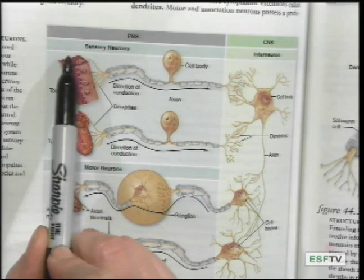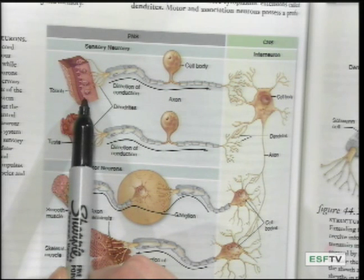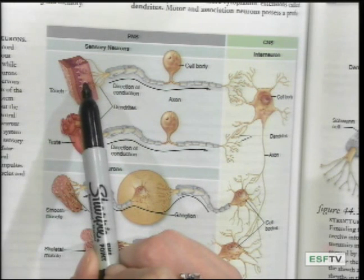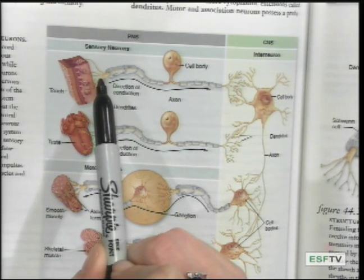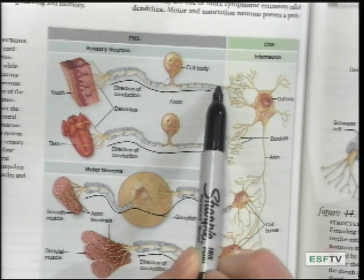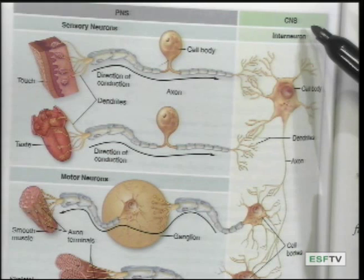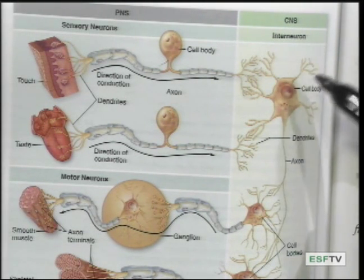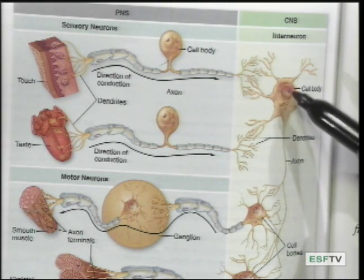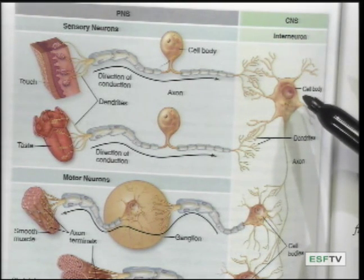You have sensory receptors that are found externally as well as internally, and these are what sense the information. This information is transmitted to the dendrites and goes along to the nerve cell body, where it is integrated and interpreted.